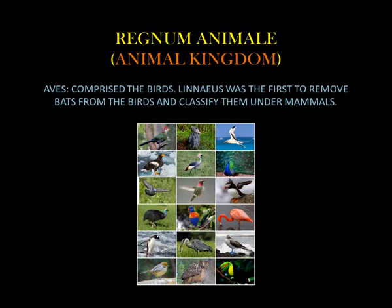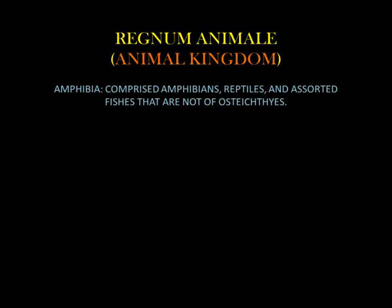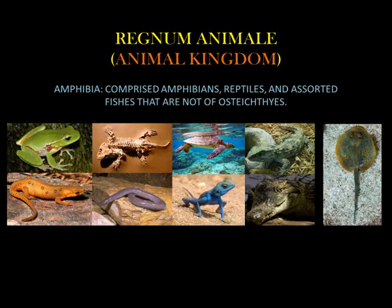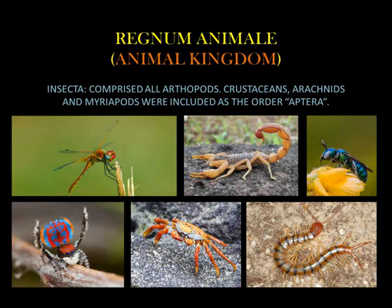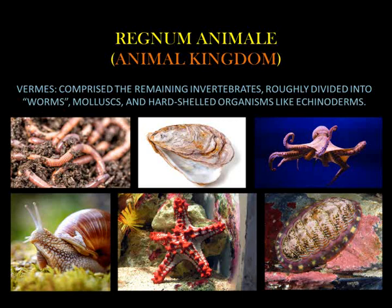Aves comprised the birds. Linnaeus was the first to remove bats from the birds and classify them under mammals. Amphibia comprised the amphibians, reptiles, and a sort of fishes that are not Osteichthyes. Pisces comprised the bony fishes, including the spine-finned fishes, Perciformes, as a separate order. Insecta comprised all arthropods — crustaceans, arachnids, and myriapods were included as the order Aptera. Worms comprised the remaining invertebrates, broadly divided into worms, molluscs, and hard-shelled organisms like echinoderms.